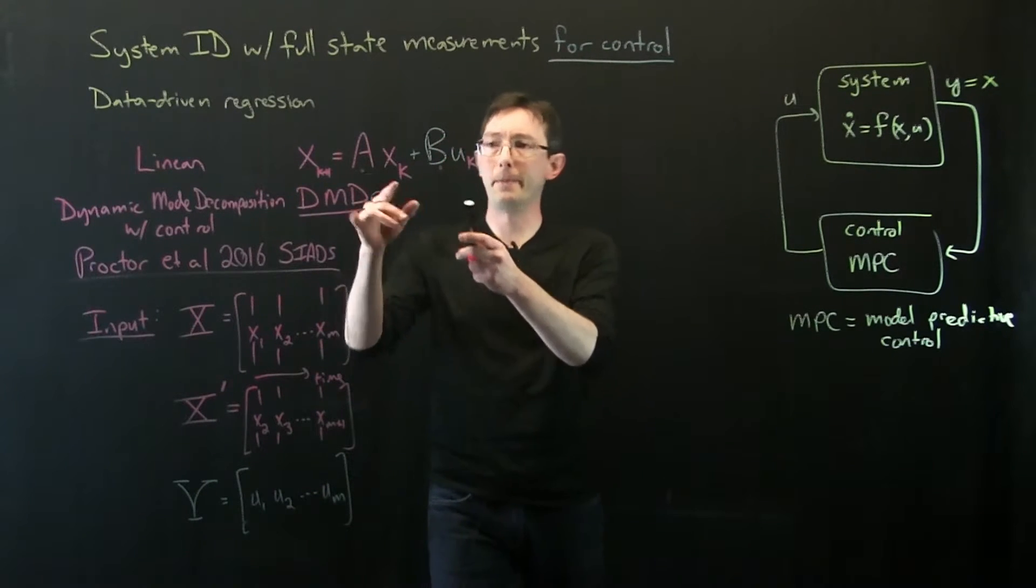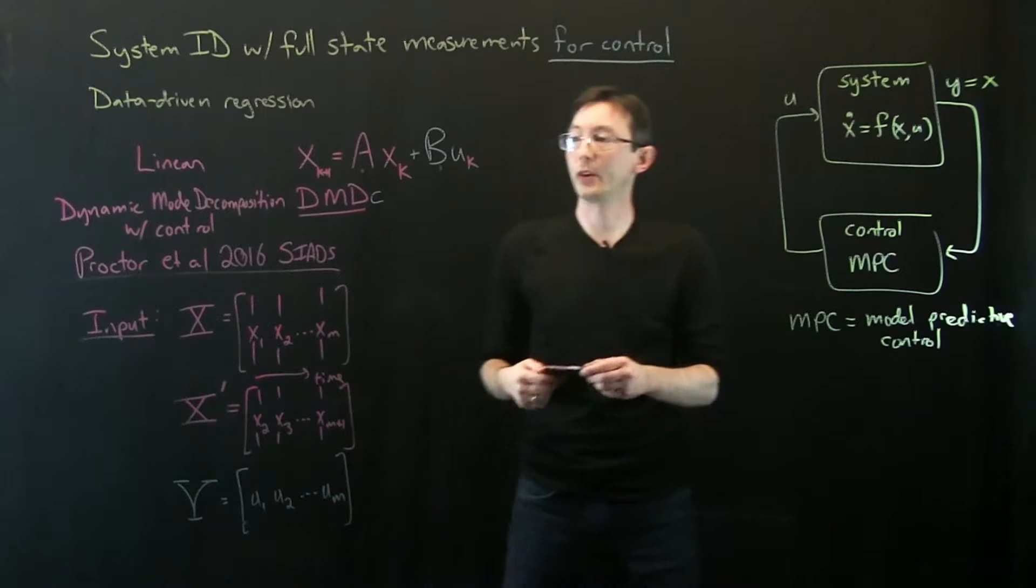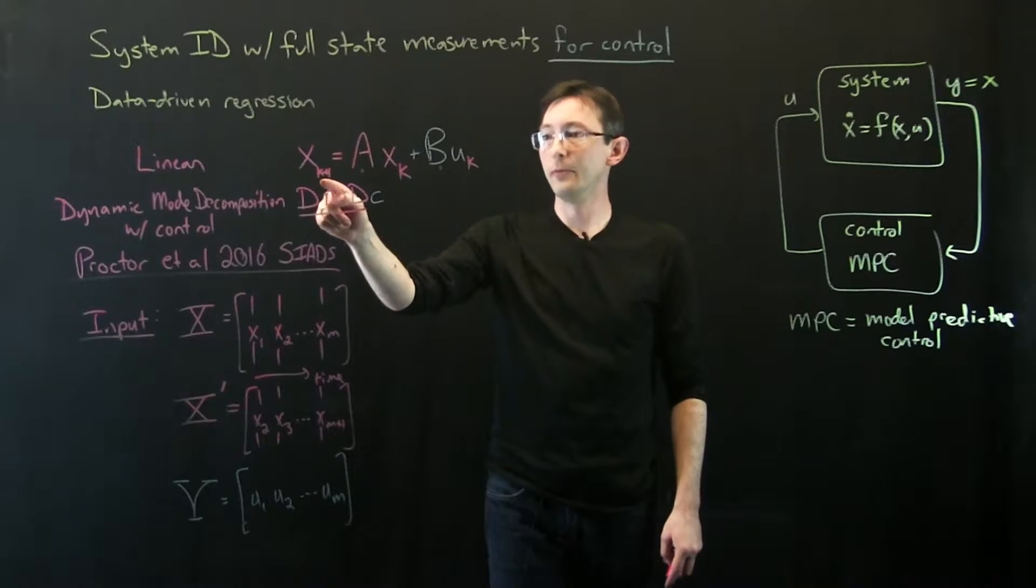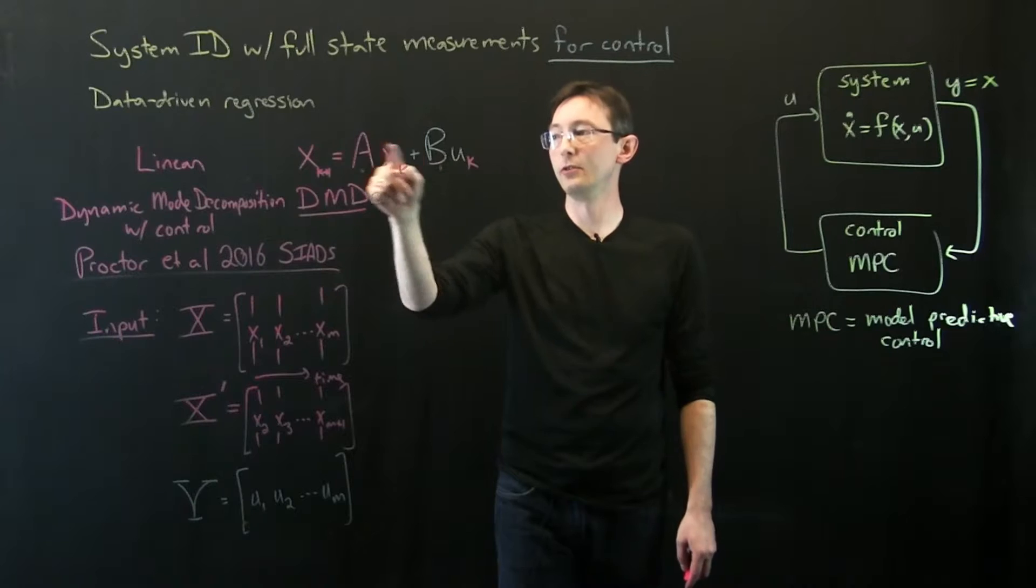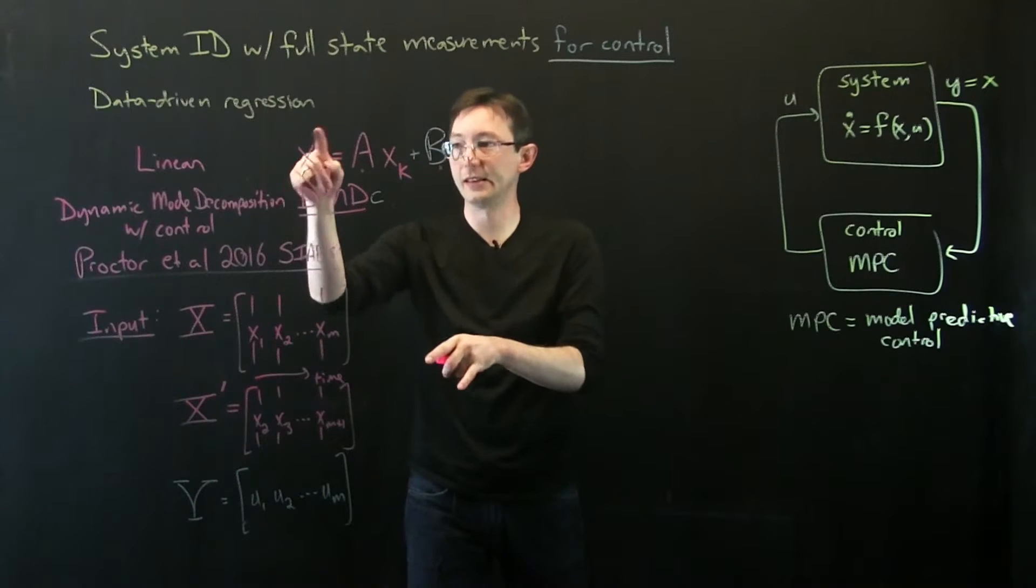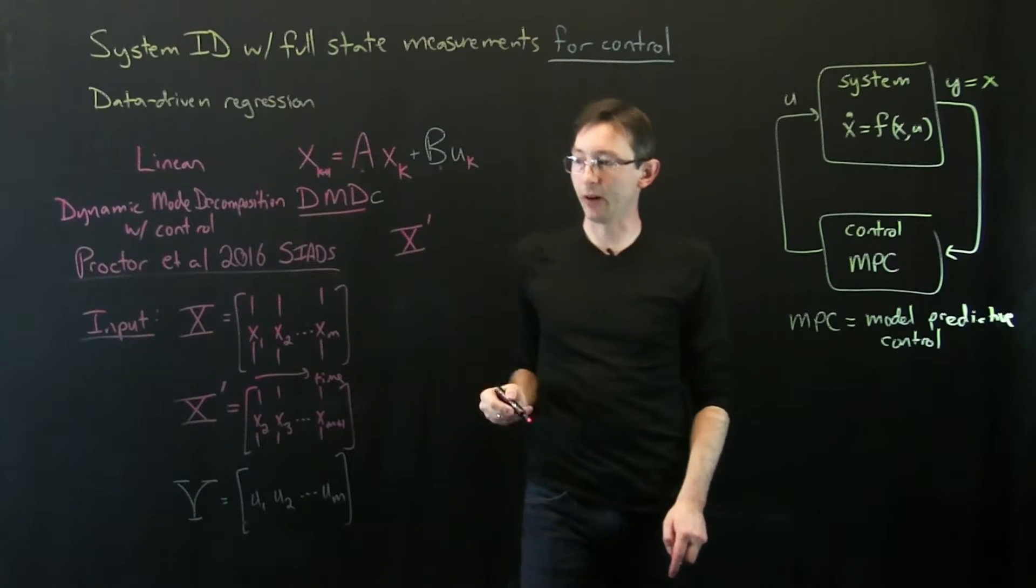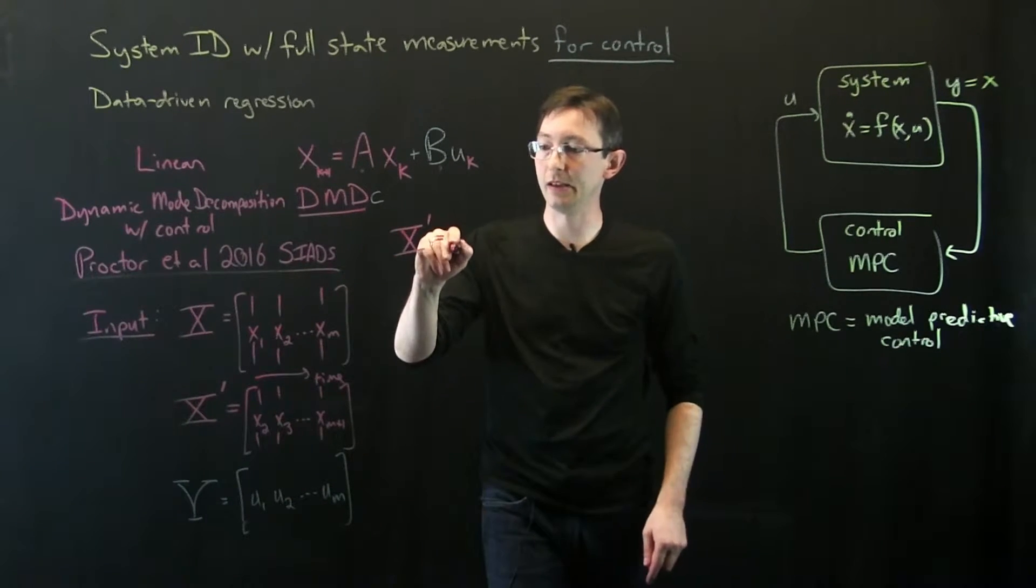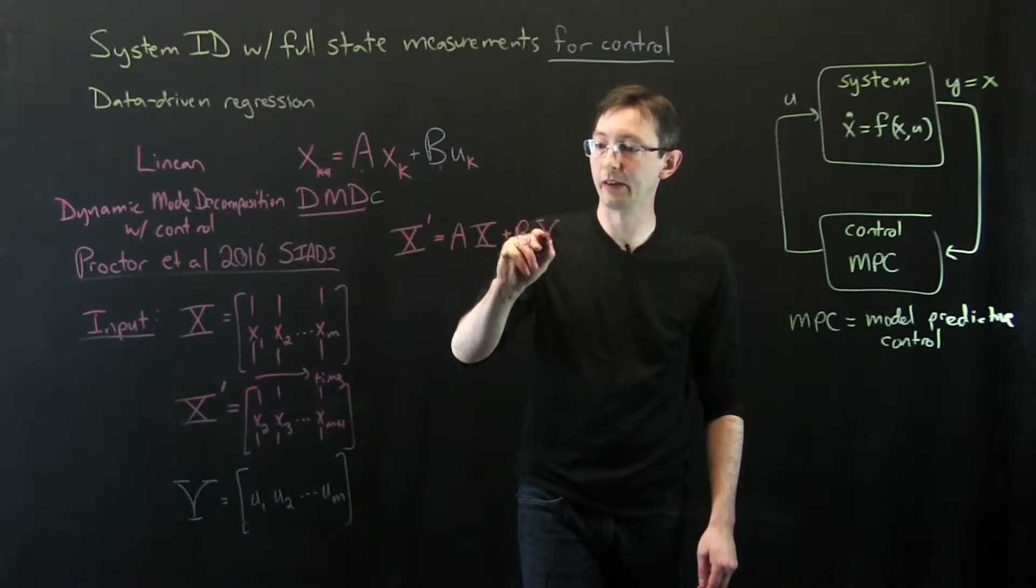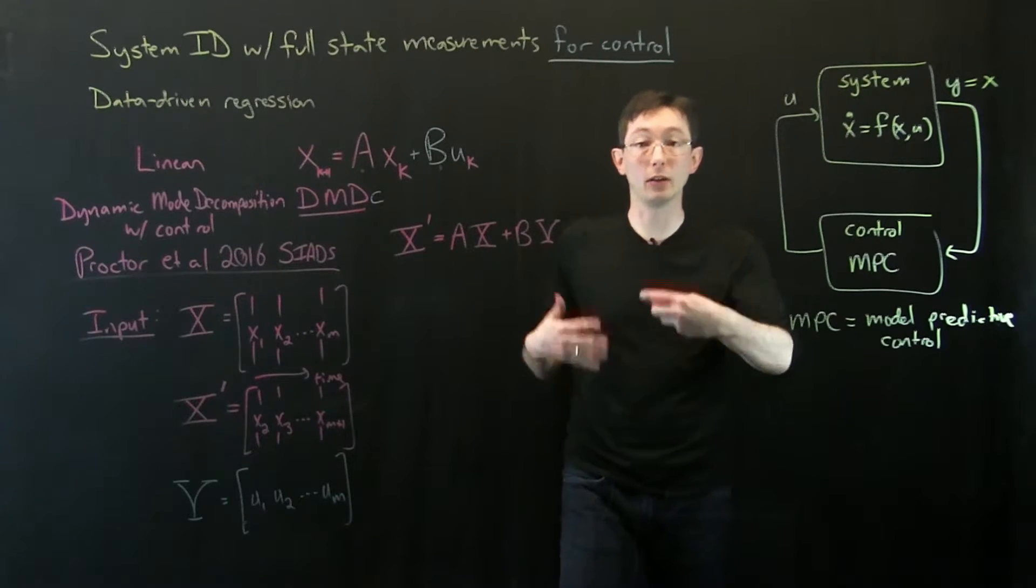Essentially what I can do is I can write this discrete time dynamical system directly in terms of these data matrices. I could plug in x1, x2, and u1, or I could plug in x2, u2, and x3. So essentially these are my x and upsilon, and this is my x prime variable. So I can write this in terms of my data matrices as x prime, the matrix of snapshots, equals big A times big X plus B times this matrix upsilon. And you can work this out. This is now a matrix system of equations, but all of the dimensions match.